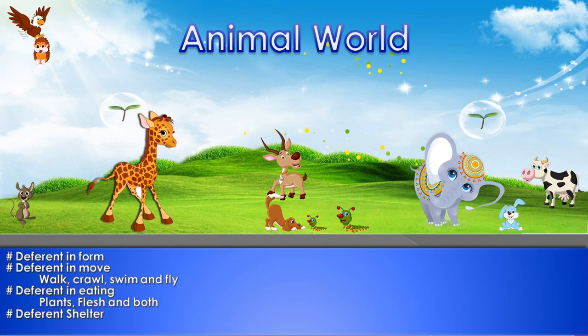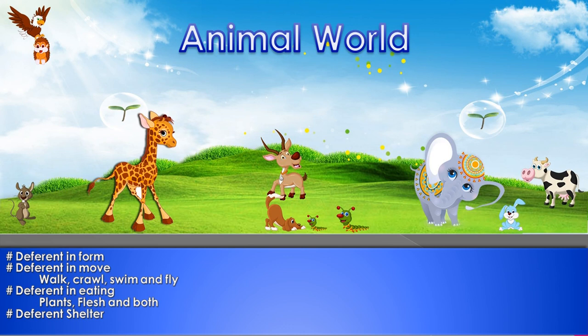Just like us, animals also grow and change their size and appearance. Young kittens grow to become cats, and a cub grows to become a tiger. As we are born as babies, then grow young, then become adults, and finally old — animals grow the same way, changing their shape and appearance.